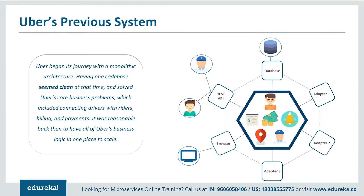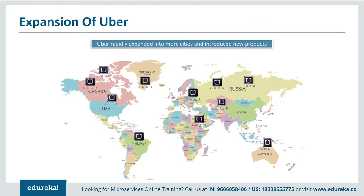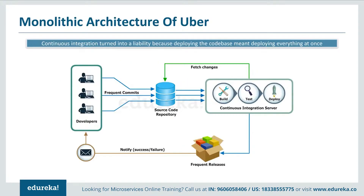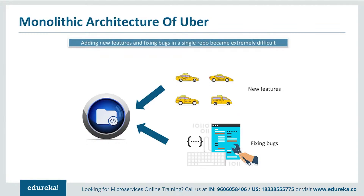So if you observe here, all the features such as passenger management, billing, notification, trip management, and driver management were composed in a single framework. Having one codebase seemed clean at the time and solved Uber's core business problems — connecting drivers with riders, billing, and payments. But as Uber started expanding worldwide into many more cities, it continuously faced problems of scalability and continuous integration. Developers could not continuously build, test, deploy, and release the software frequently. Also, adding new features and fixing bugs in a single repository became extremely difficult.